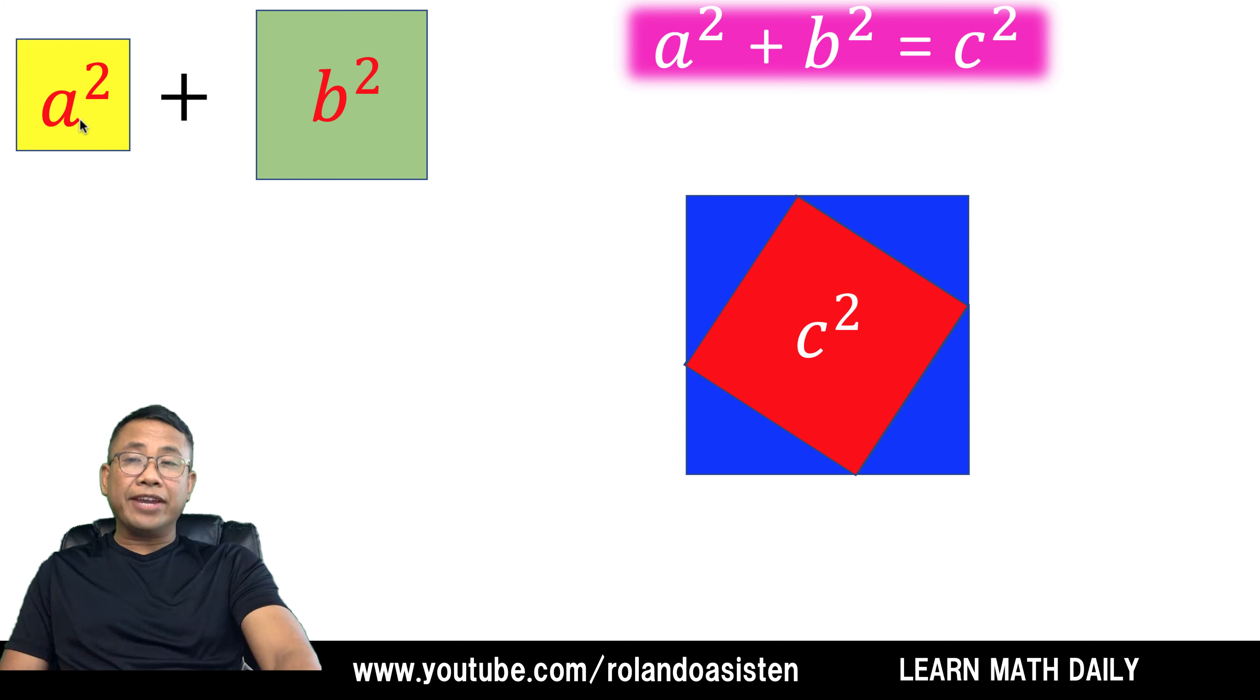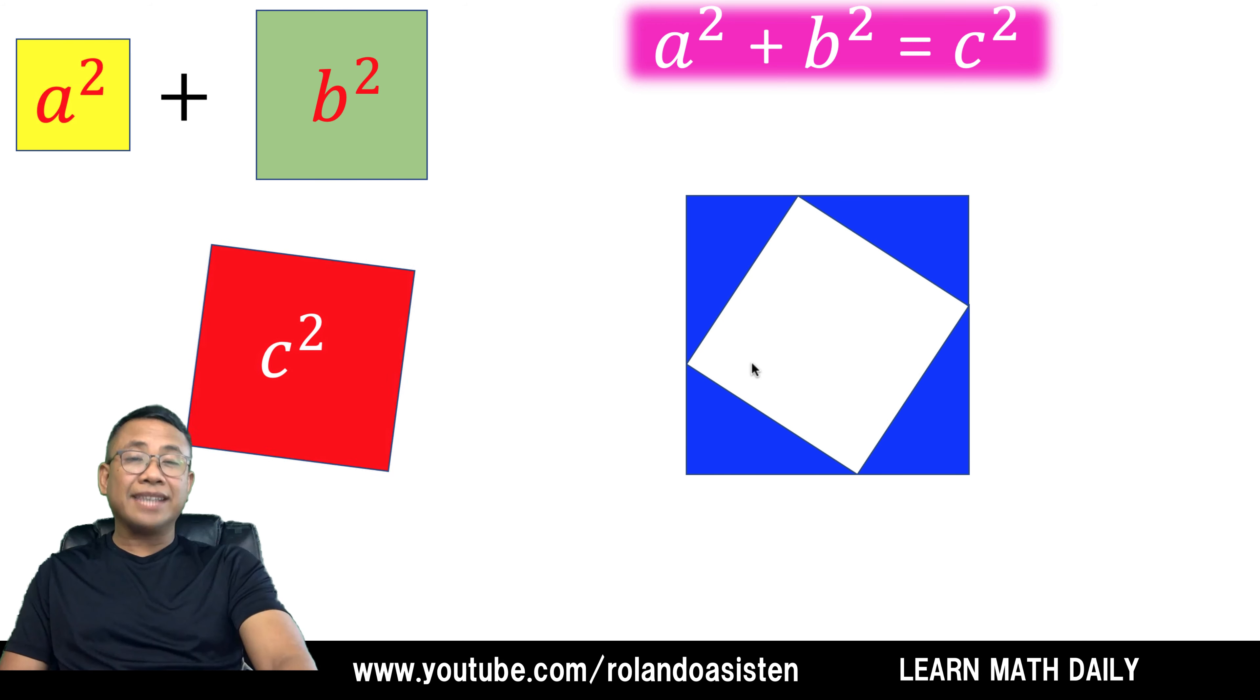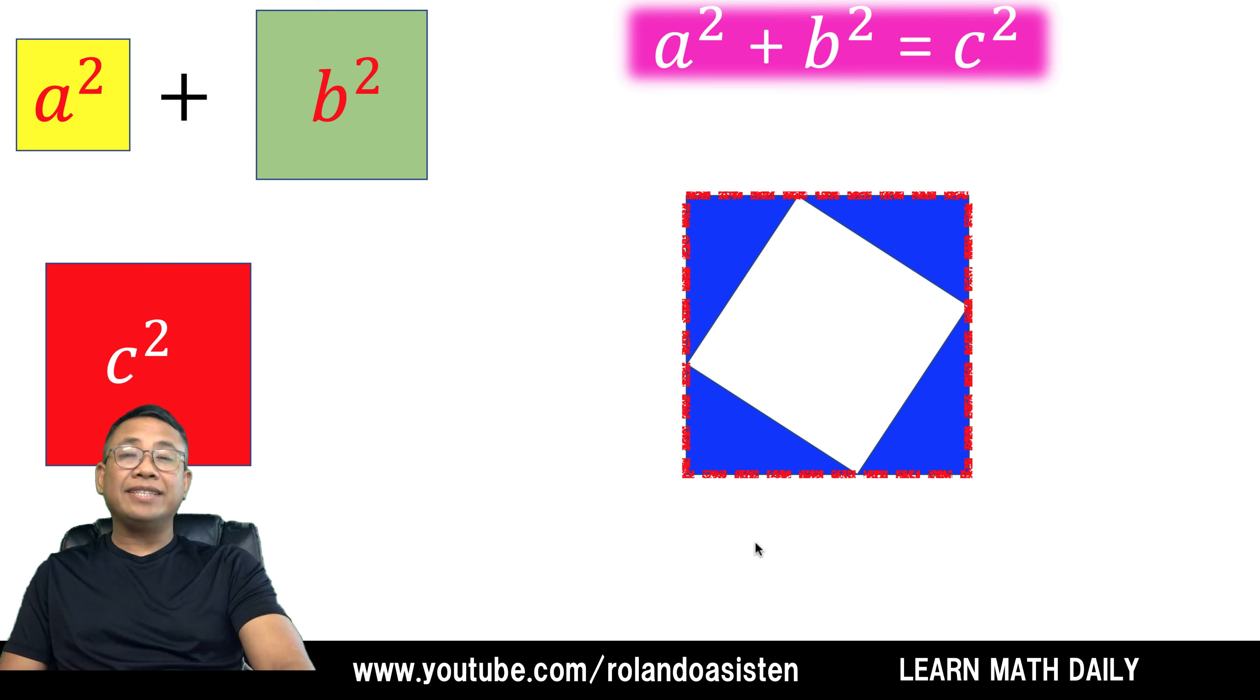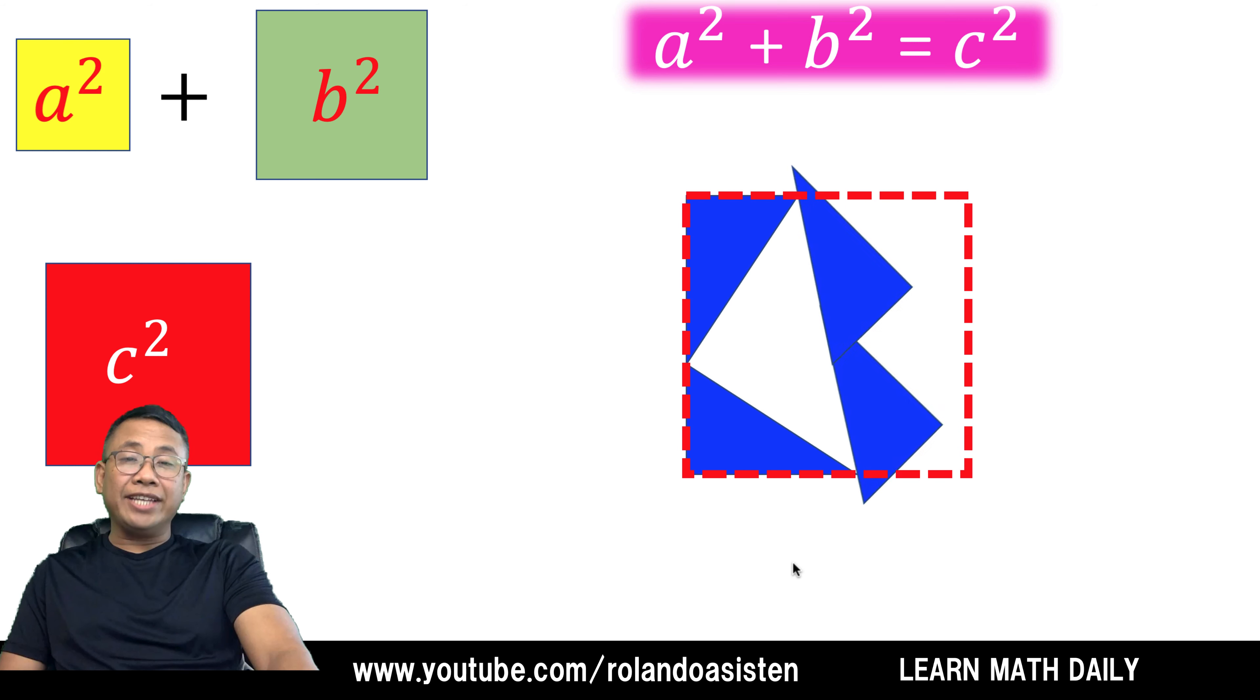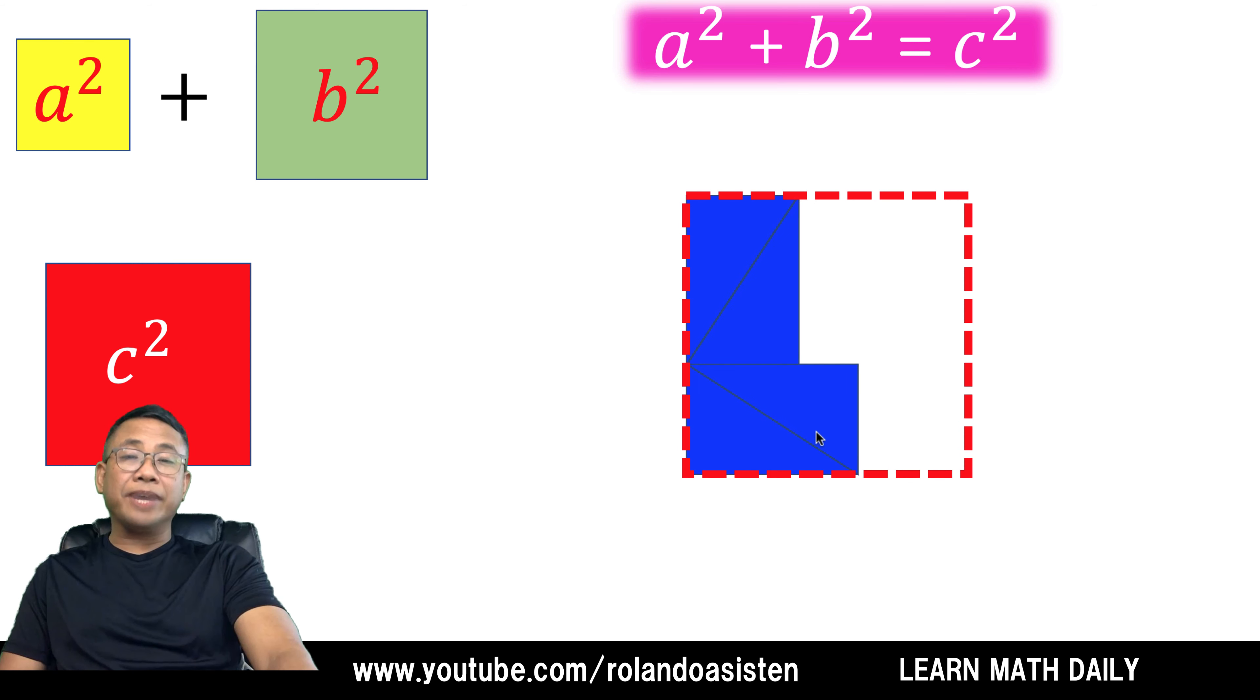So the challenge now is how can we fit in these two squares inside this hollow space? Let's trace the perimeter so that we can know the original shape and size of the square. Then let's rearrange the blue right triangles this way, and let's fit in now B squared into this space and A squared into that space.